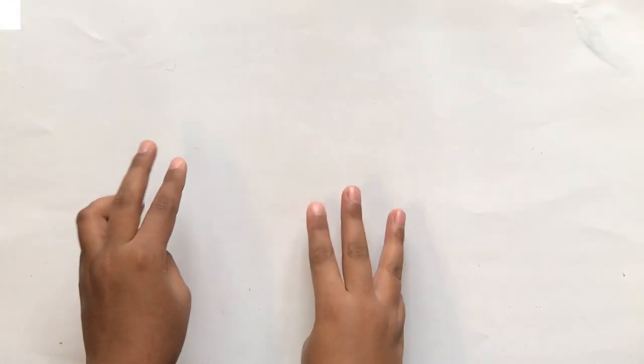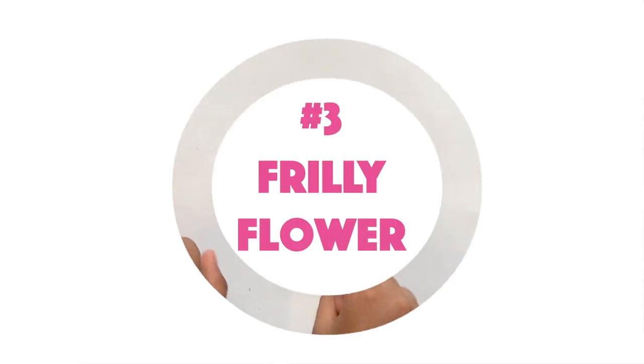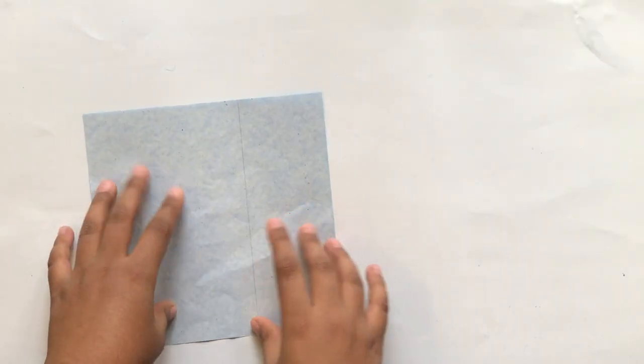So, the third one is frilly flower. Now, in this, you take your origami sheet. The color is your choice.